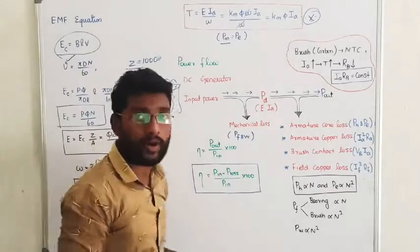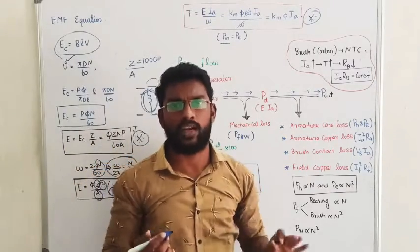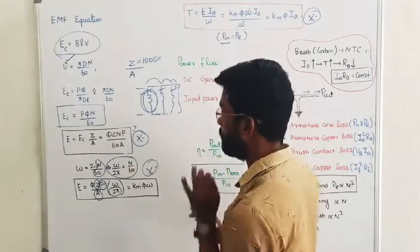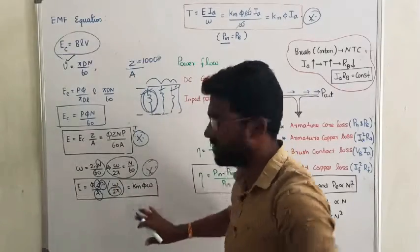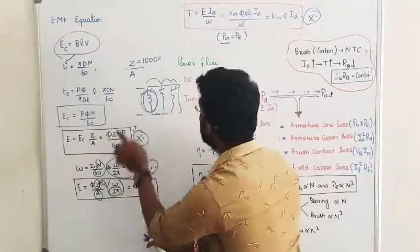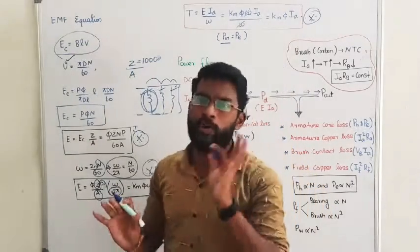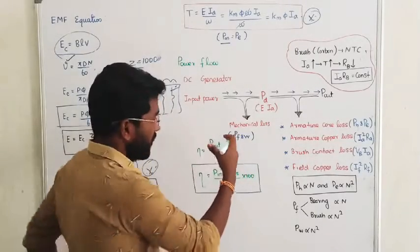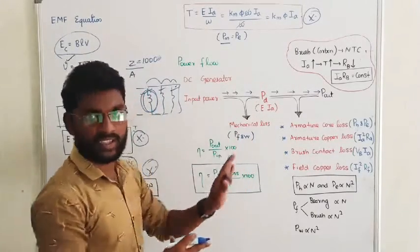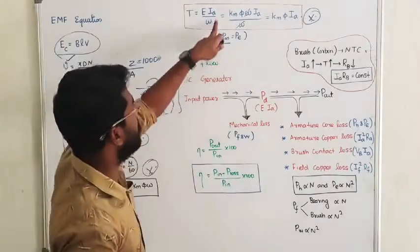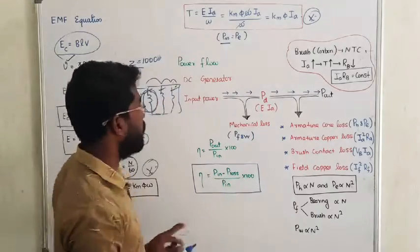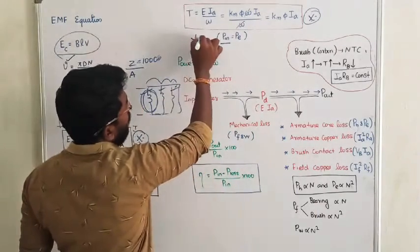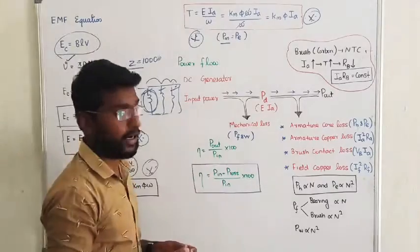For the DC machine, almost 95% of numerical questions rely on these two equations: E = Km·φ·ω and T = Km·φ·Ia. If you remember these two relations, you can solve nearly all numerical questions. Don't forget them.